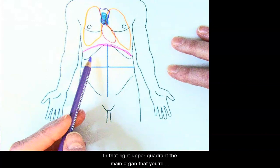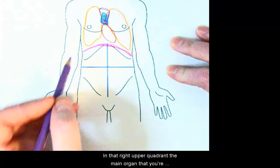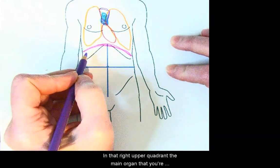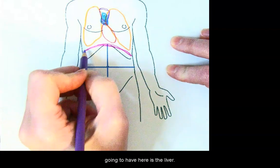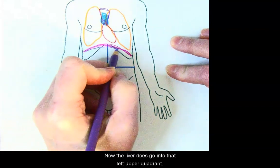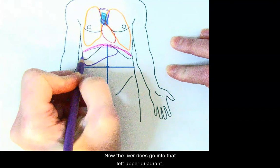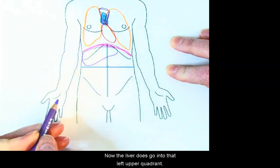In that right upper quadrant, the main organ that you're going to have here is the liver. Now the liver does go into that left upper quadrant.